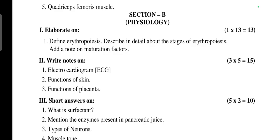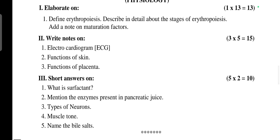Functions of skin, functions of placenta - total 15 marks. Short answer questions: What is surfactant? Mention the enzymes present in pancreatic juice, types of neurons, muscle tone, and name the bile salts - 2 marks each, total 10 marks.